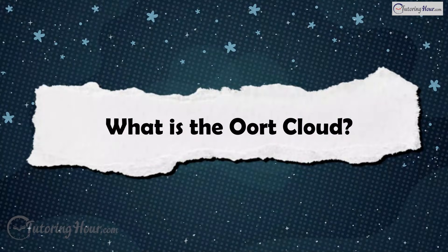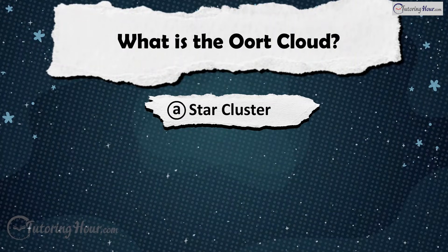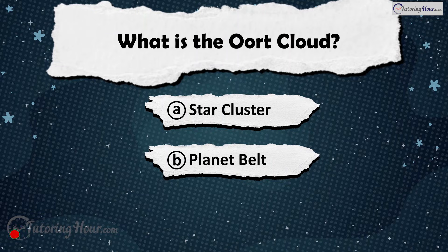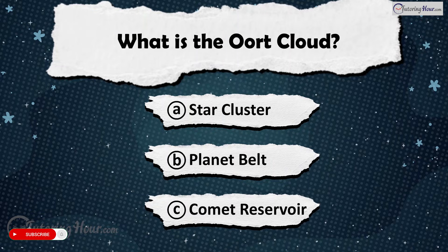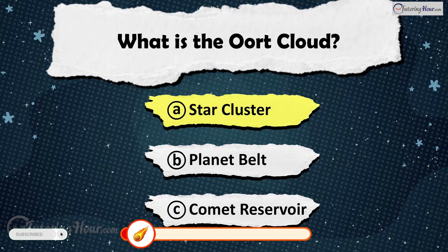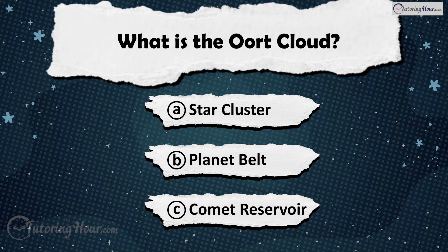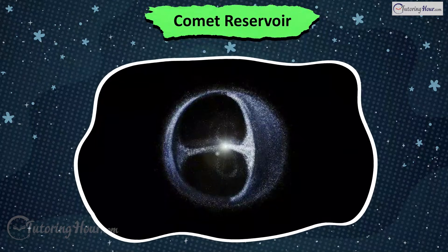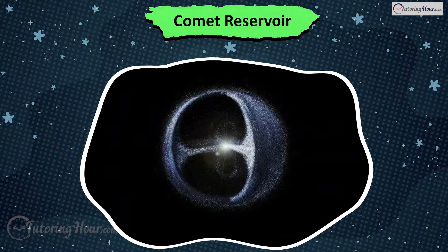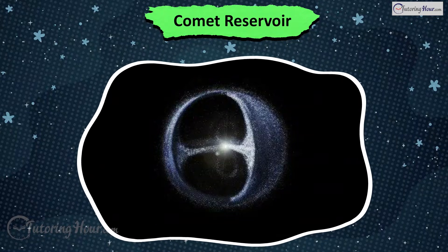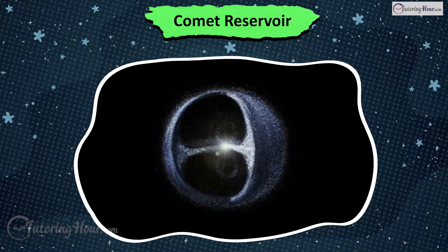What is the Oort Cloud? Is it A) Star Cluster, B) Planet Belt, or C) Comet Reservoir? The answer is Comet Reservoir. The Oort Cloud is a distant region where long-period comets originate.